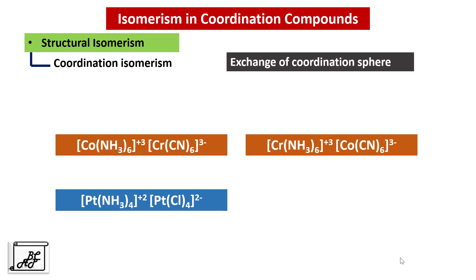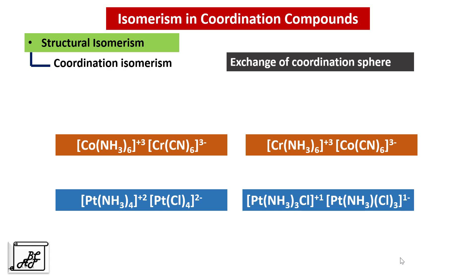In another example, in the first case all four ammonia molecules are associated with one platinum and all four chloride atoms with the other platinum. In its coordination isomer, one chloride and three ammonia molecules are with one platinum, and three chloride and one ammonia molecule with the other platinum. This is called Coordination Isomerism.